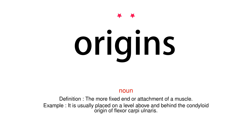Noun. Definition: The more fixed end or attachment of a muscle. Example: It is usually placed on a level above and behind the condyloid origin of flexor carpi ulnaris.